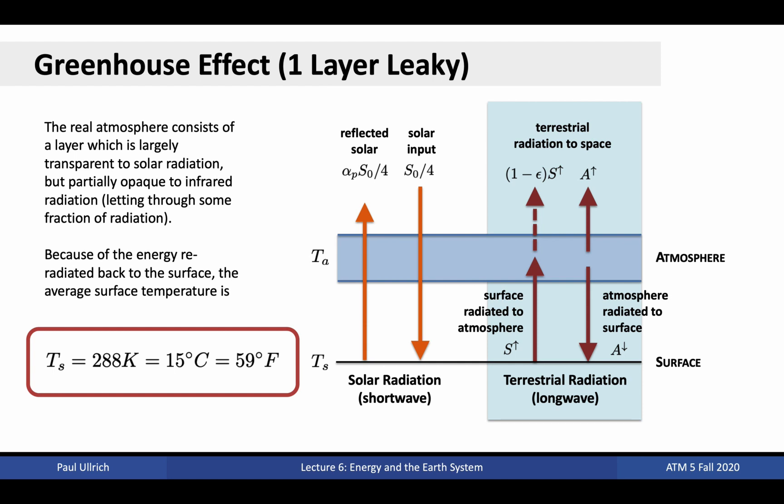For an extreme example of the greenhouse effect, we can look to our planetary neighbor Venus. Venus has an atmosphere much thicker than the Earth. The emission temperature on Venus is actually minus 47 Celsius, but the surface temperature is a scorching 464 Celsius, a difference of nearly 500 degrees between the emission temperature and the surface temperature.